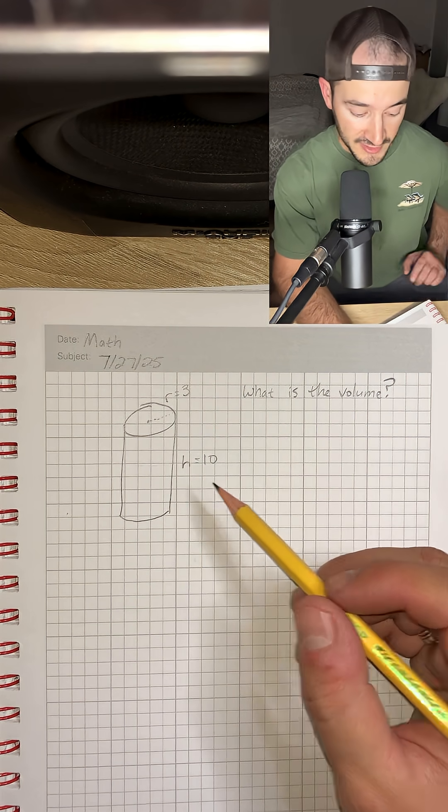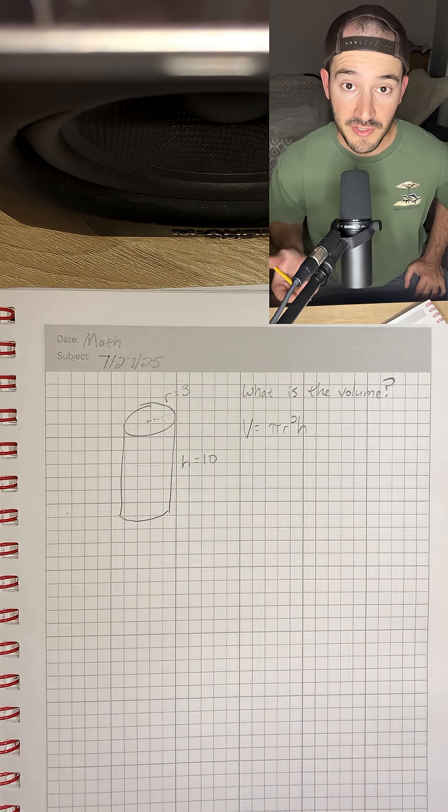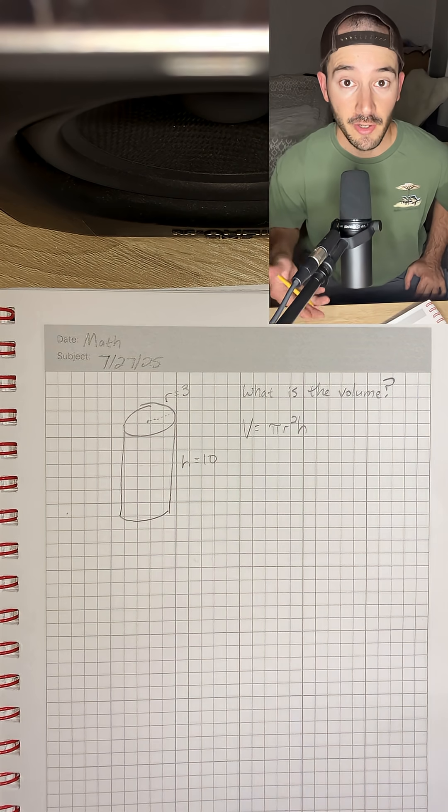So we know that the volume of a cylinder is V equals π r squared times height. All we have to do is just plug in the radius and the height and that'll give us our answer.